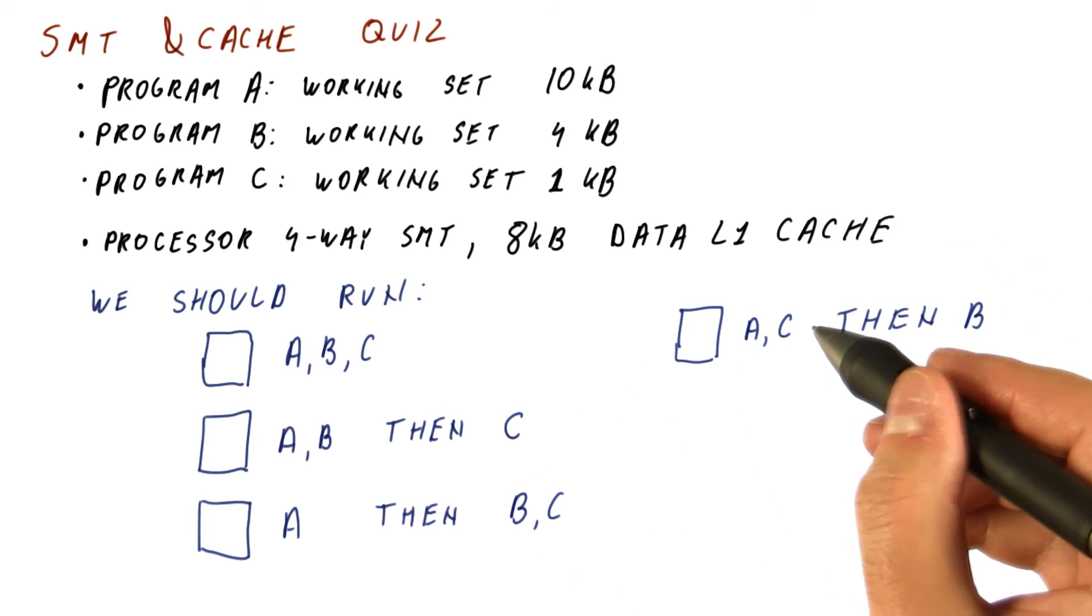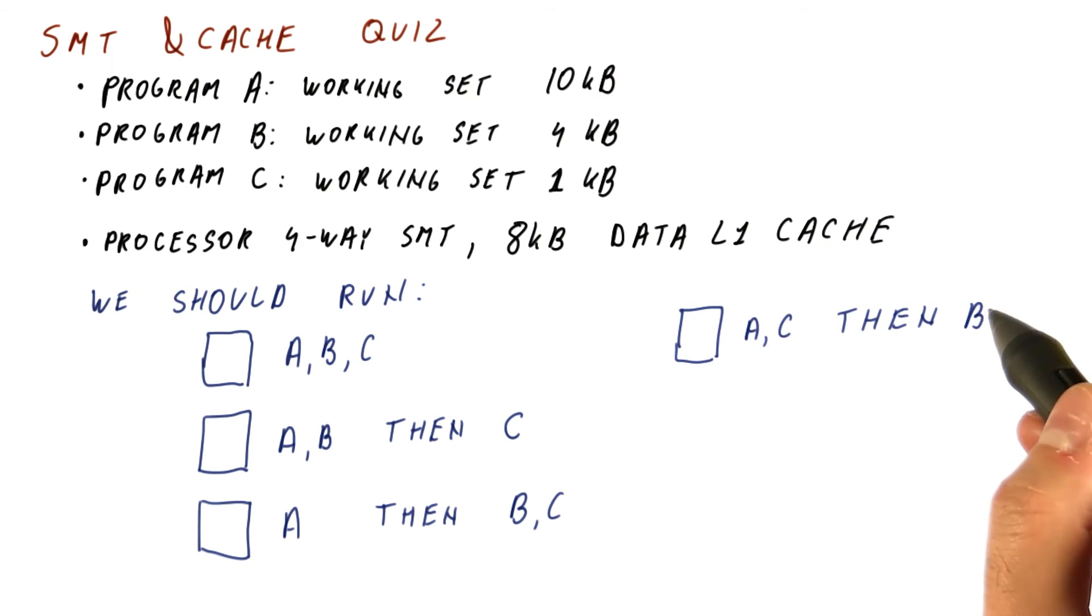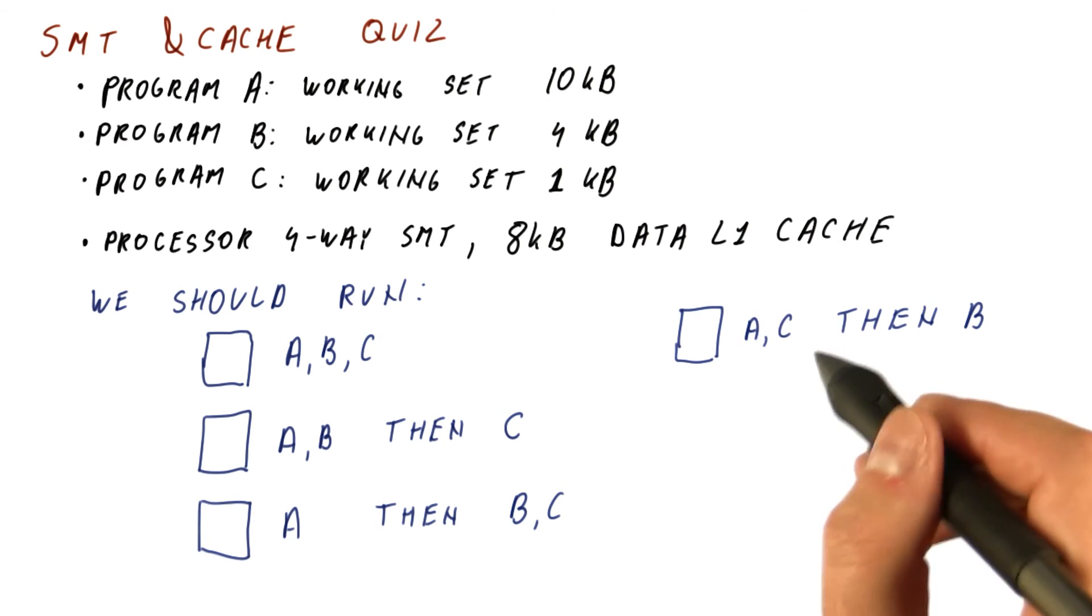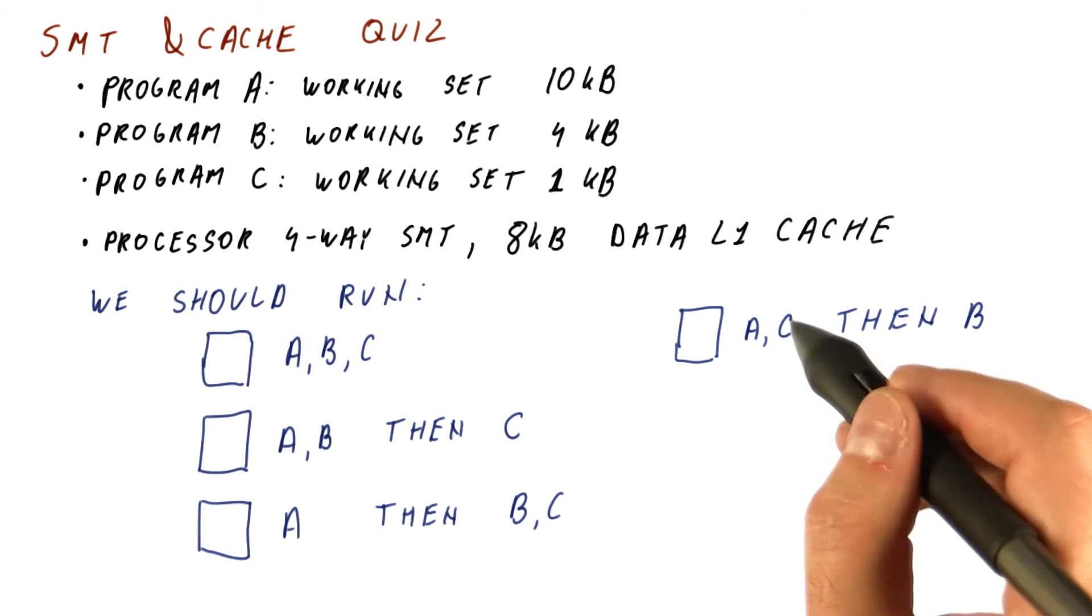Run A and C together, then B, but don't do B simultaneously using multi-threading when we are doing A and C.